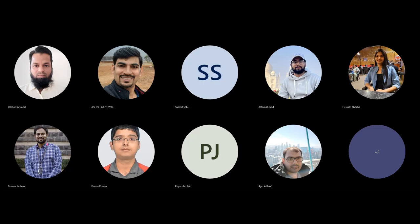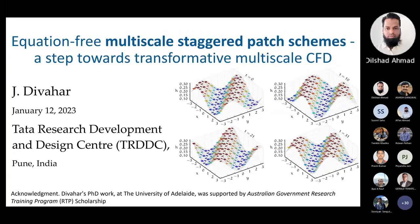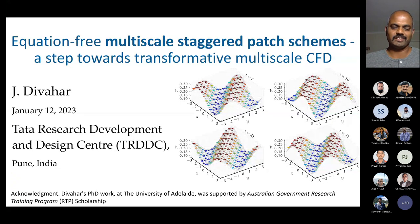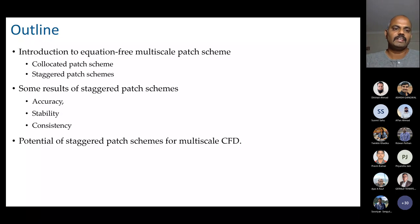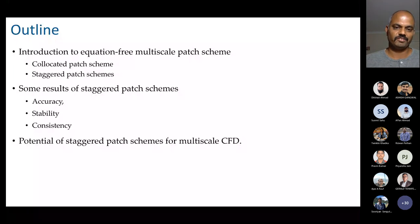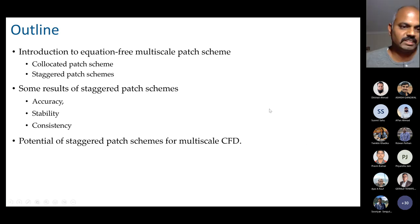From this chart I came to know about some of the excellent works being done in TRDDC, and also that most of you are post graduates and PhDs. It is my pleasure and honor to present this talk. The equation-free patch schemes I would estimate have about 10 to 20 people around the world working on them. For equation-free staggered patch schemes there are only four people working on it, which includes me and three of my PhD supervisors.